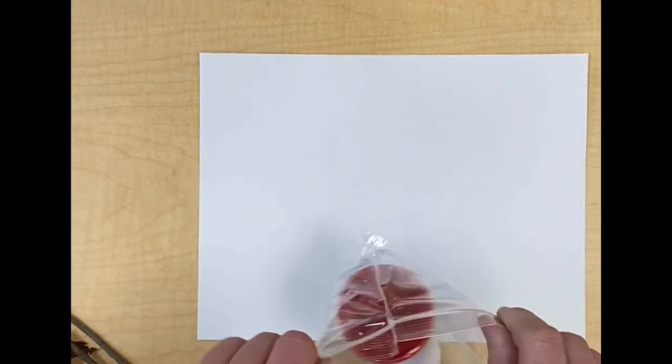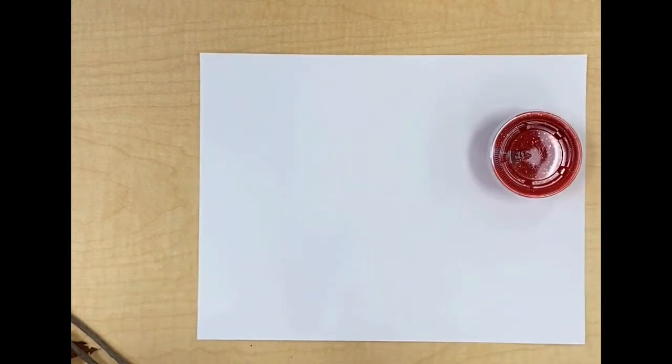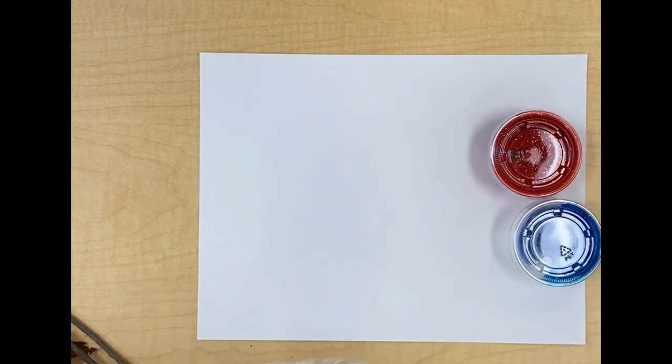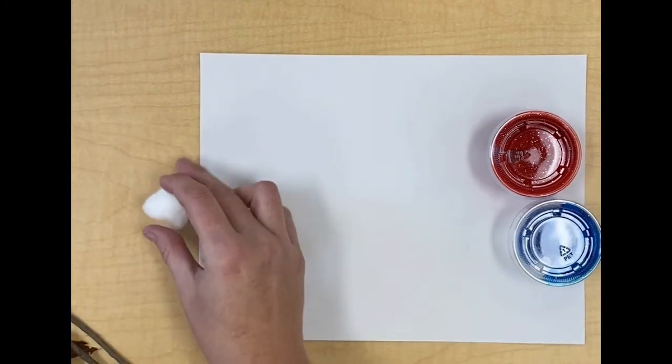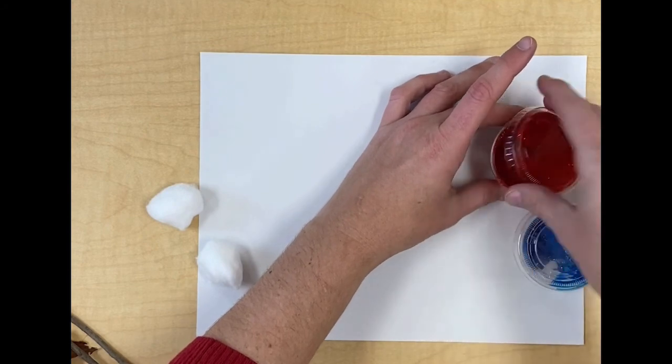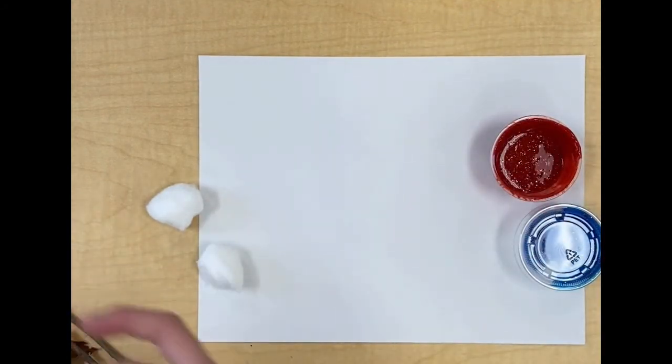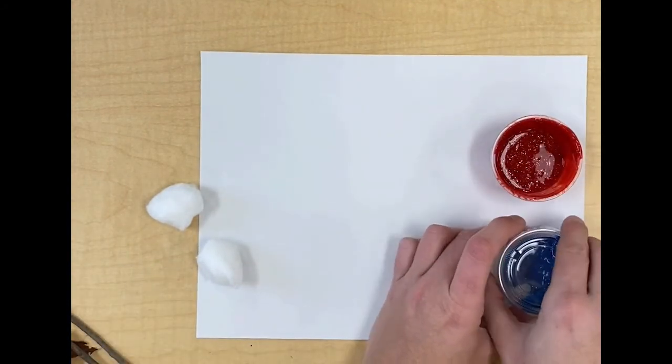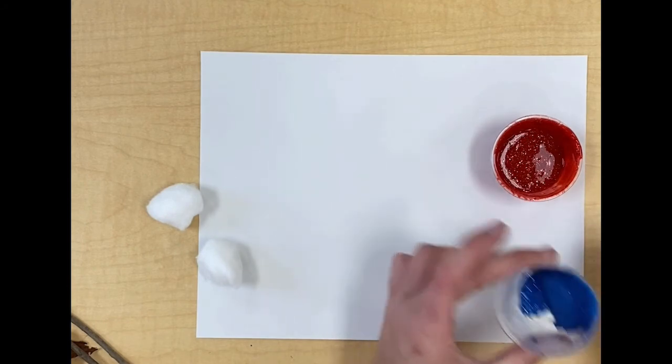Next we're going to take out our paints. Now your paints might be a different color than mine but they all have some glitter in it. I thought that would be fun for today. So everyone should have two paints and two cotton balls. Now let's uncap our paint. Oh I can already see the sparkle in my red and the sparkle the glitter in my blue.